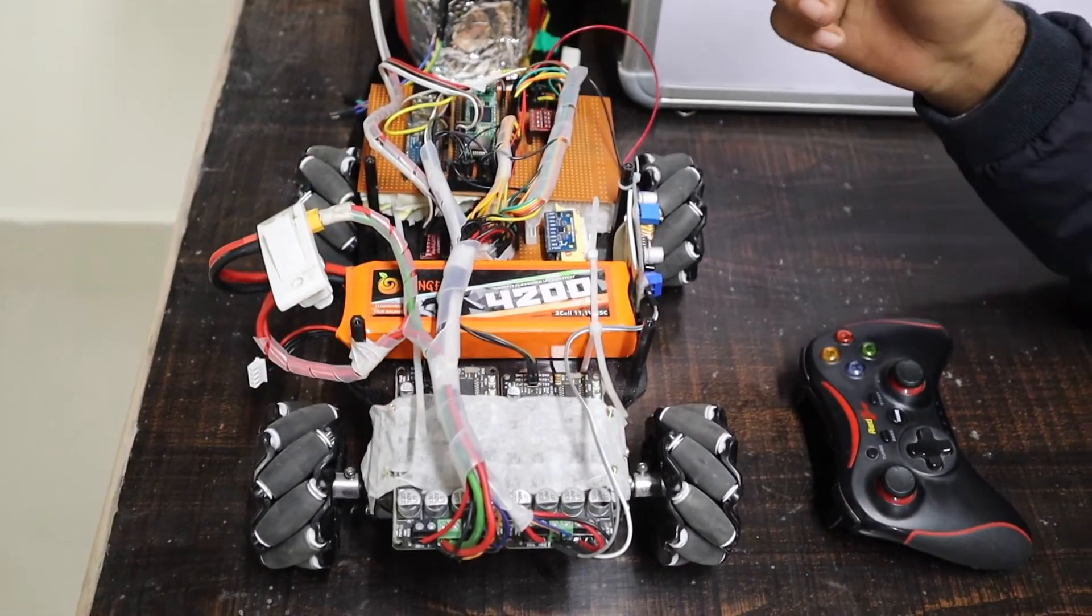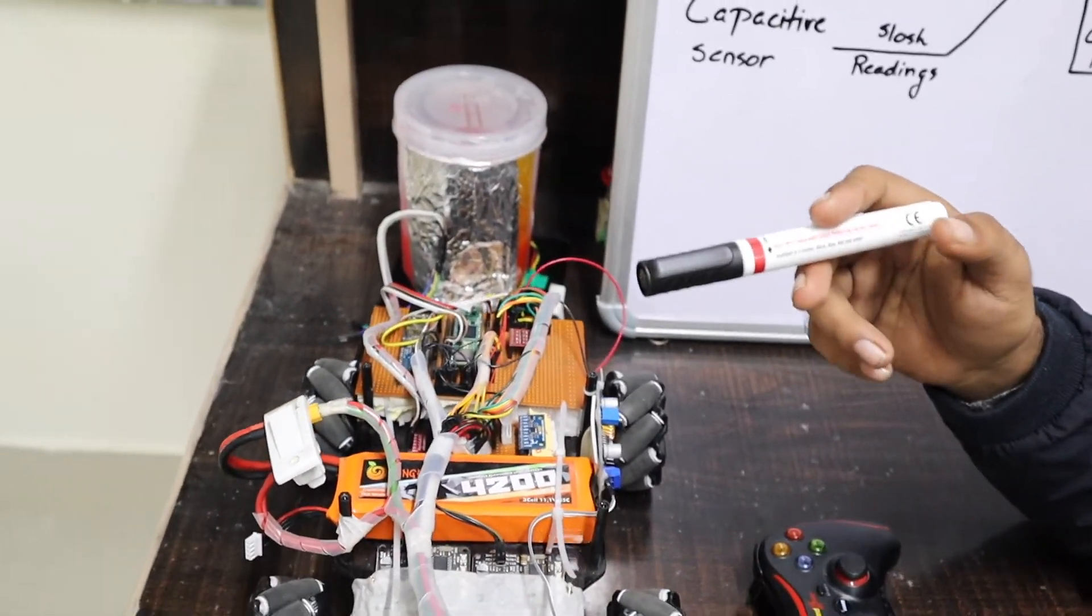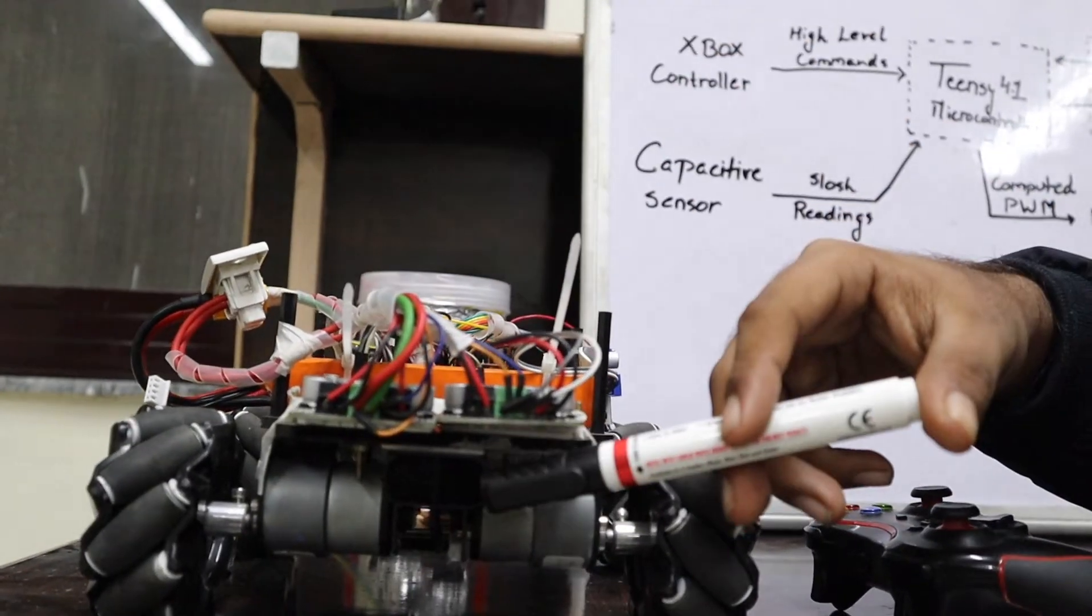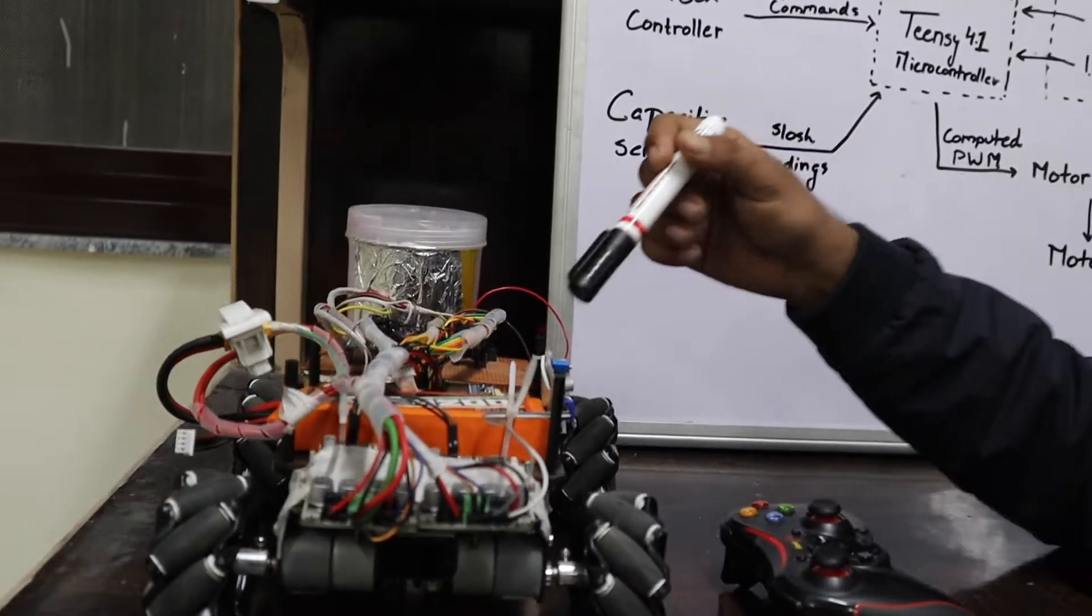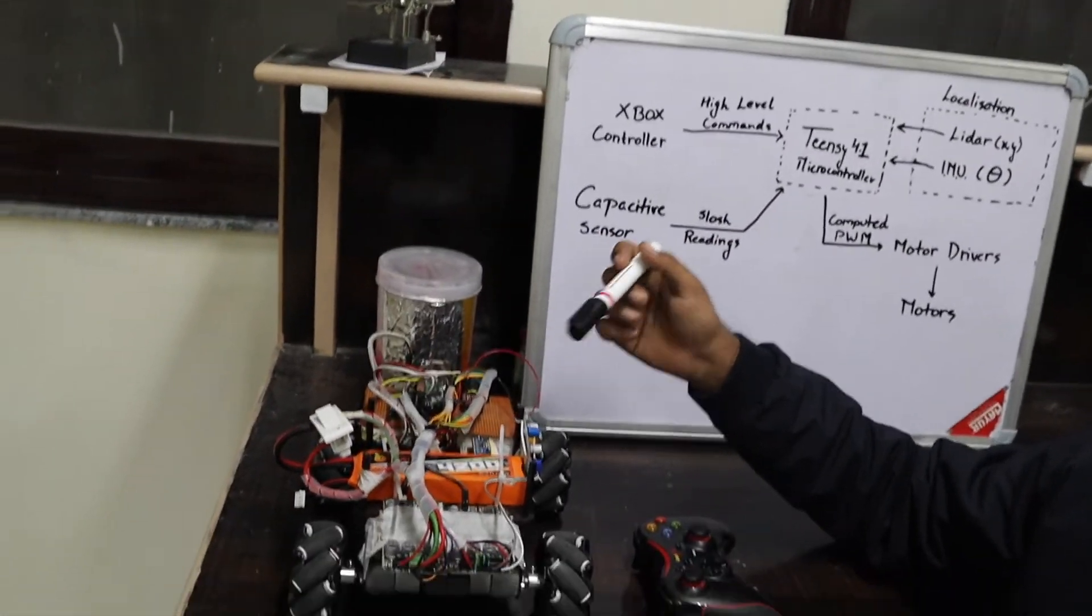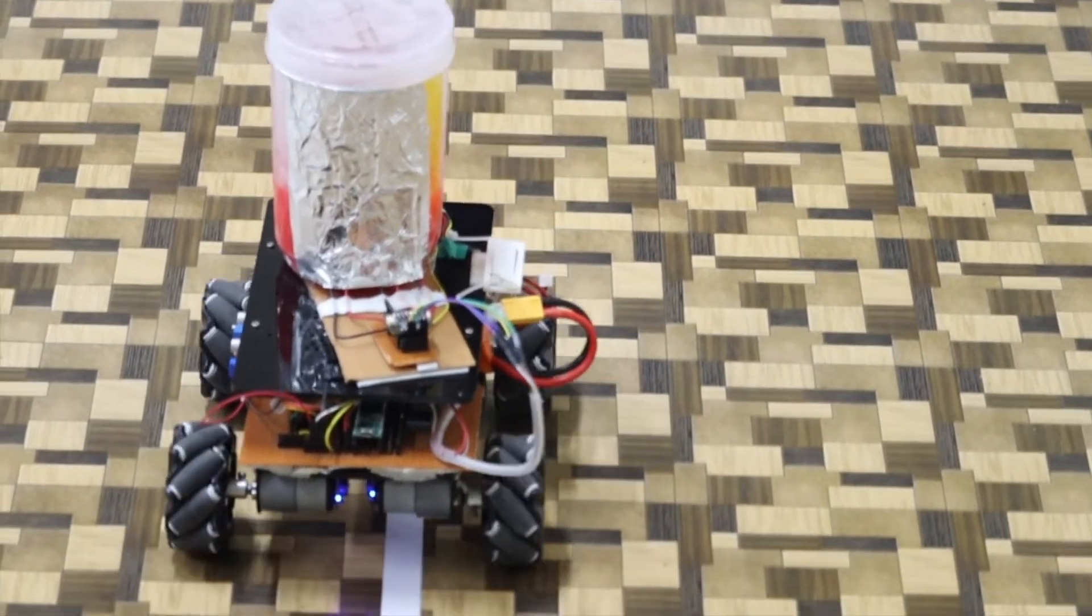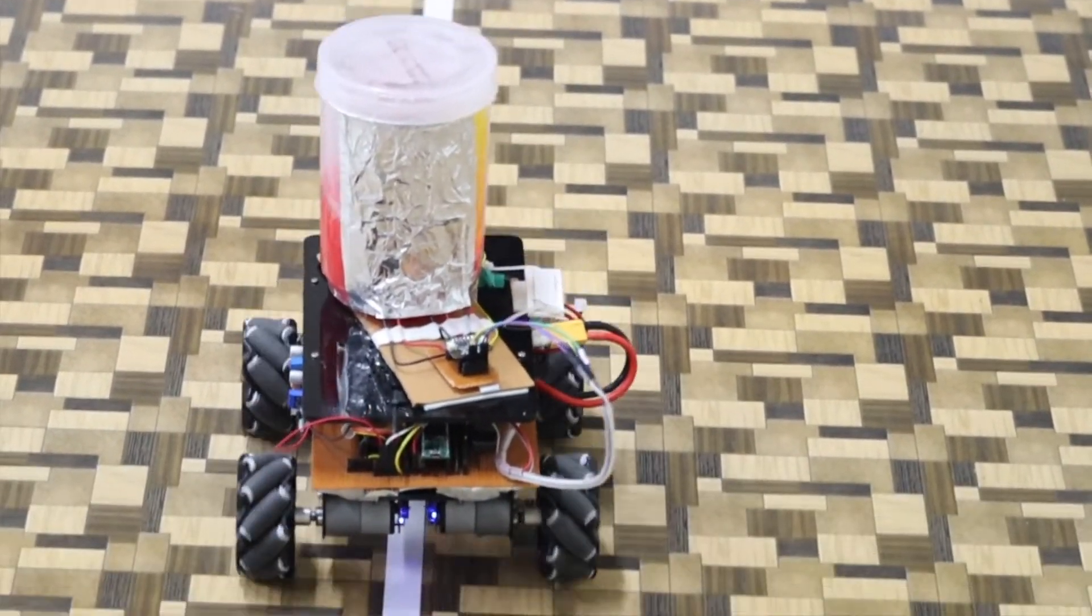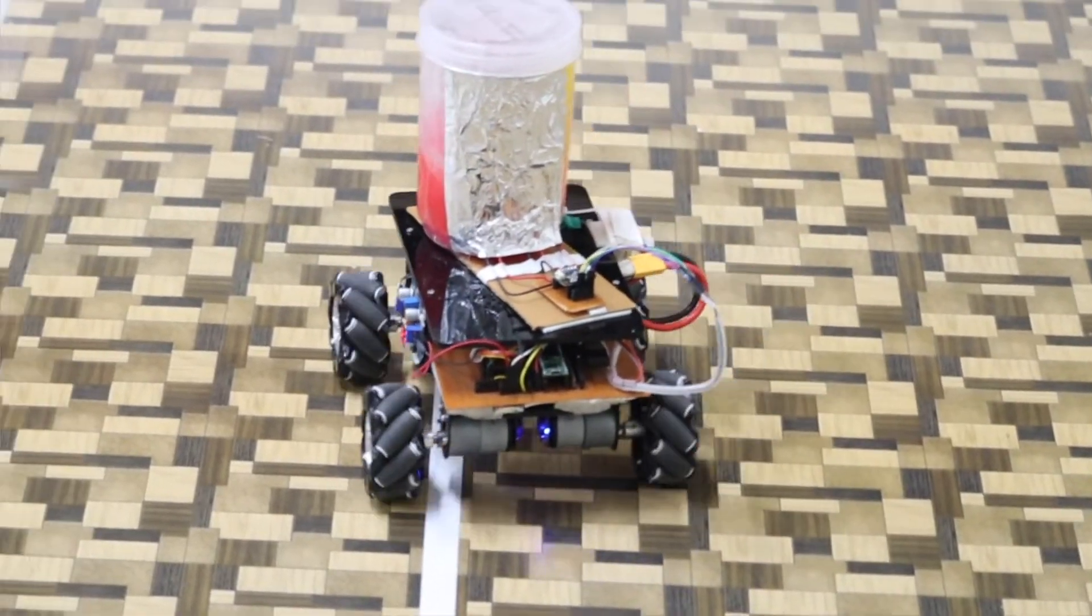For localization, we are using two LIDAR sensors placed perpendicularly which provide the x and y coordinates of the robot, and an IMU sensor which provides the yaw reading of the robot. We are using a four-wheel mecanum drive, which is a holonomic drive—that is, it can move in any direction without changing its orientation. This property is really useful for minimizing two-dimensional slosh.